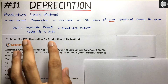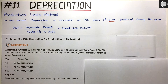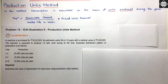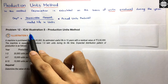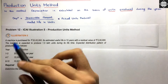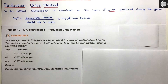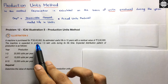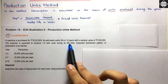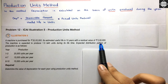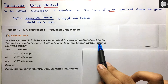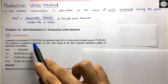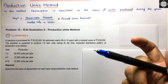Now let's see a problem — this is from the ICAI study material, Illustration 5, and it's our 12th problem. A machine is purchased for ₹20 lakhs. Its estimated useful life is 10 years with a residual value of ₹2 lakhs. So the depreciable amount is 20 minus 2 = ₹18 lakhs.